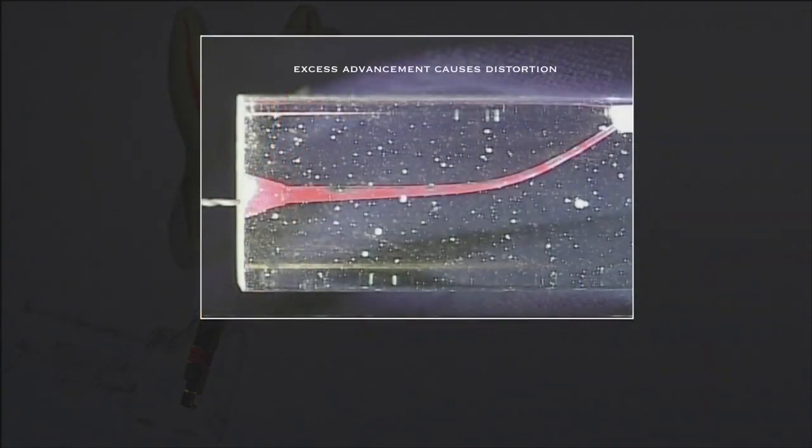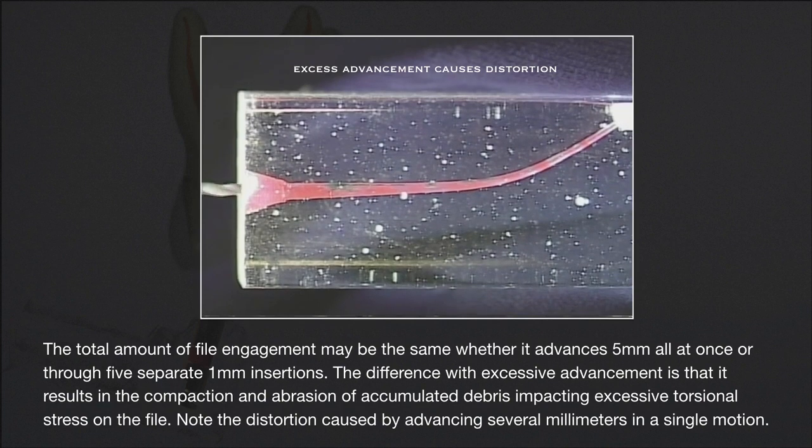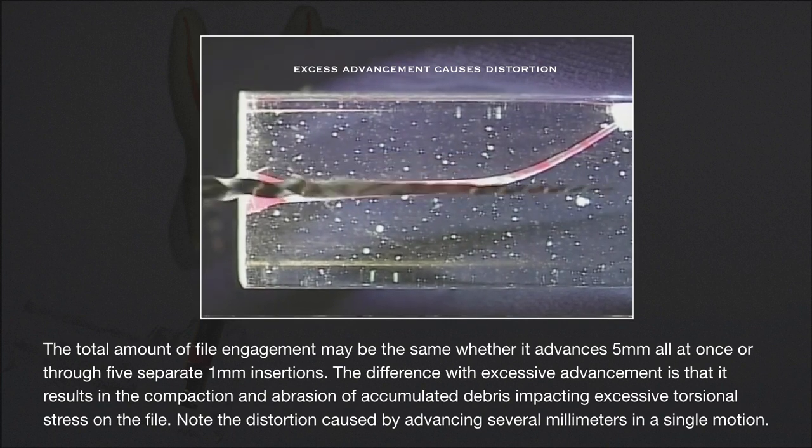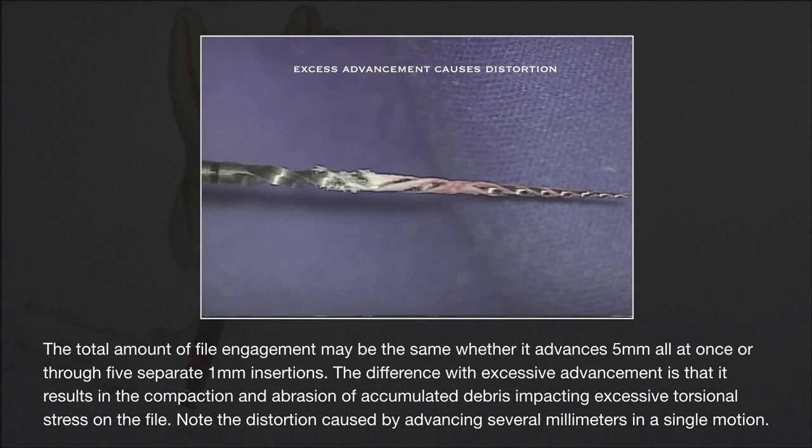The total amount of file engagement may be the same whether it advances 5 mm all at once, or through 5 separate 1 mm insertions. The difference with excessive advancement is that it results in the compaction and abrasion of accumulated debris impacting excessive torsional stress on the file.